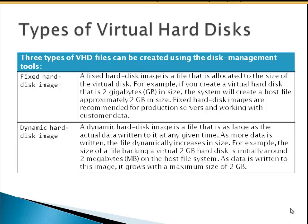Then we have a dynamic hard disk image. A dynamic hard disk image is a file that is as large as its actual data written to it at any given time. As more data is written, the file dynamically increases in size. For example, the file backing a virtual 2GB hard disk is initially around 2MB on the host. As data is written to the image, it grows to a maximum size of 2GB. So if we give 10GB to the virtual machine, it will use as much as it needs and dynamically expand that disk until it reaches 10GB.